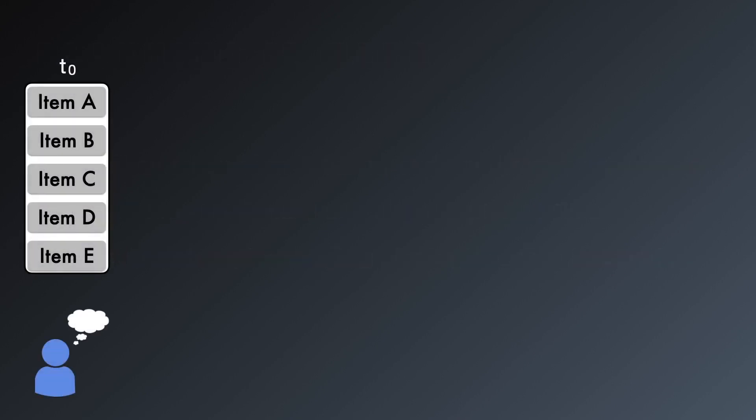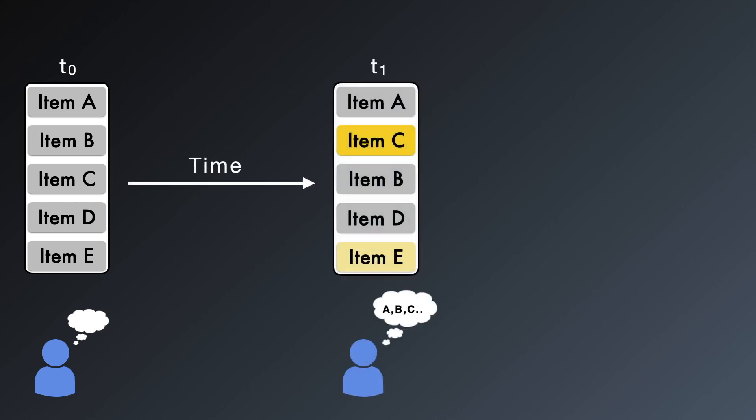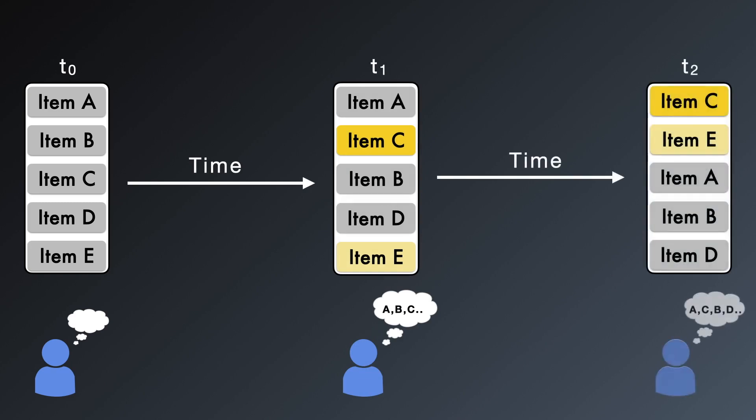Let's consider a simple case where a person comes across an adaptive menu such as this one. Through interactions, they learn and build up mental representations of the menu. So, an adaptation that was beneficial initially might become quite harmful when made at a later time.